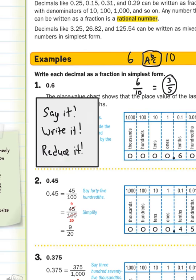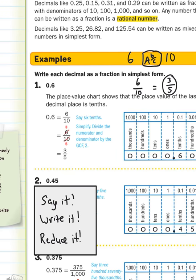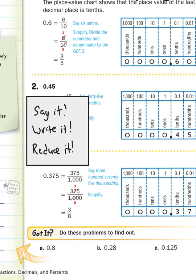In example two, we have this decimal. Say it, write it, reduce it. First, you have to know how to say it: forty-five hundredths. Now I'm going to write that as a fraction: forty-five hundredths. That's step two. Last, reduce it — you could reduce it on your calculator, or without a calculator they both divide by five, and you get nine twentieths. Final answer. Remember: say it — forty-five hundredths; write it — forty-five hundredths; reduce it — nine twentieths.